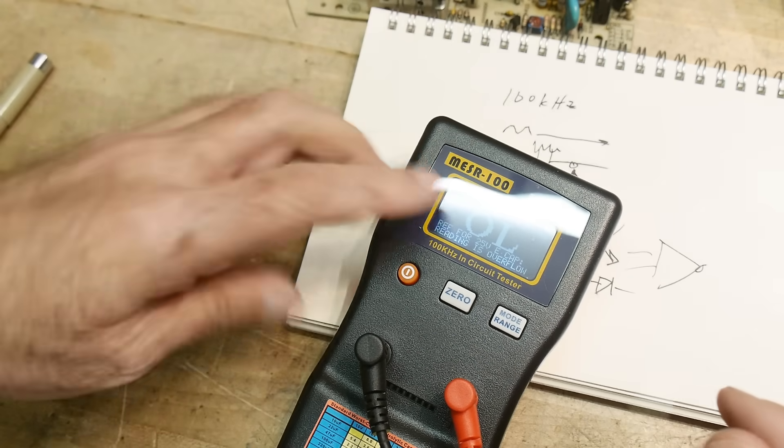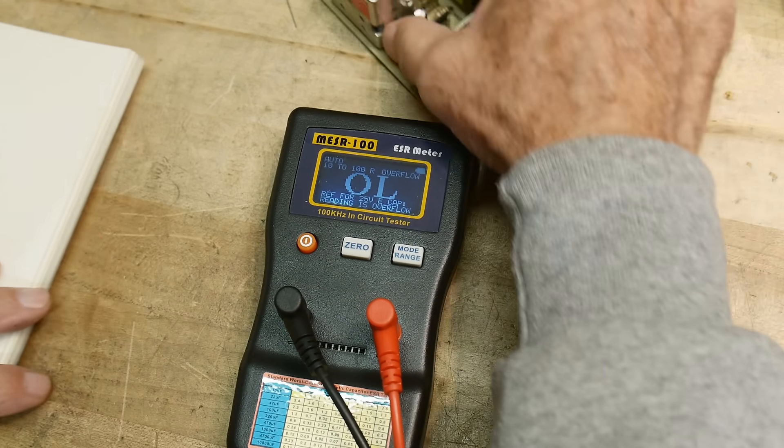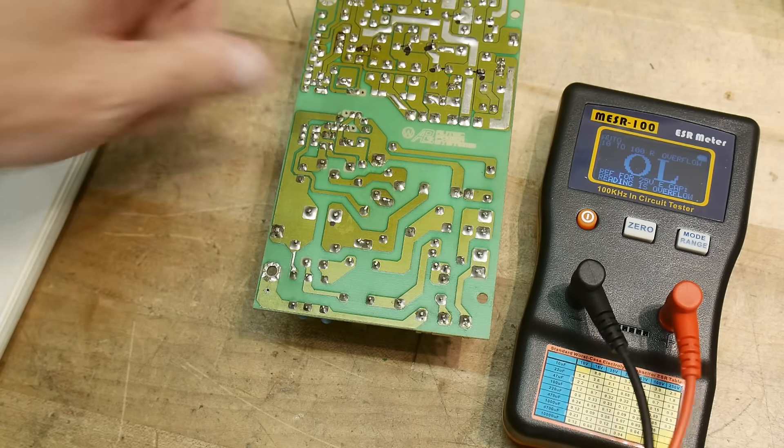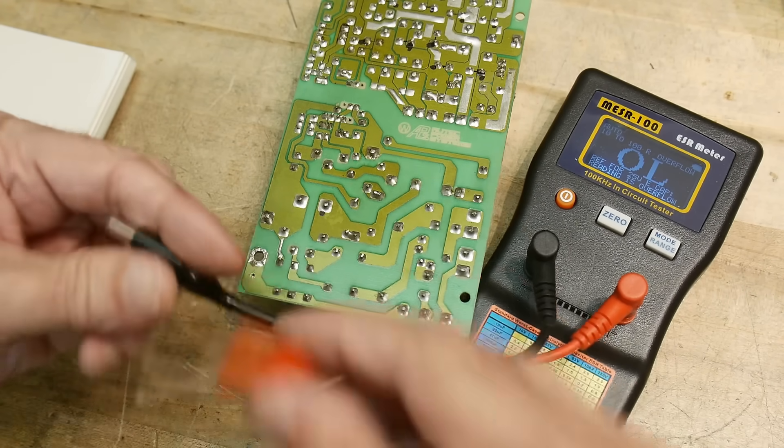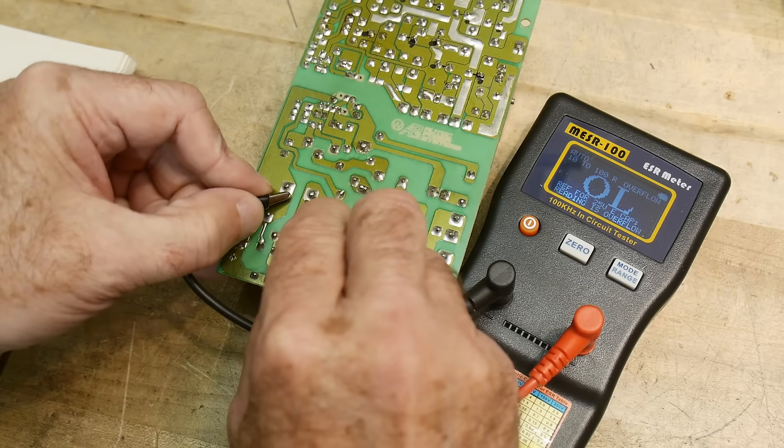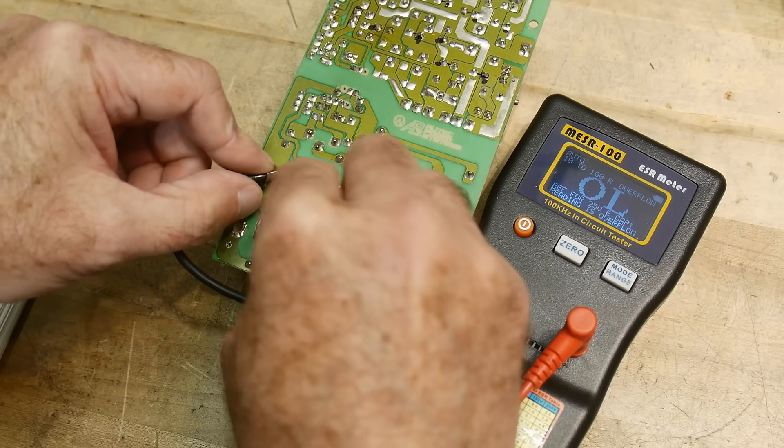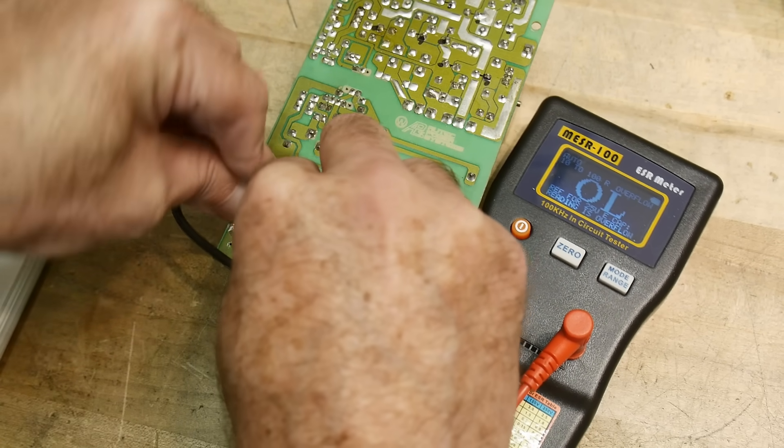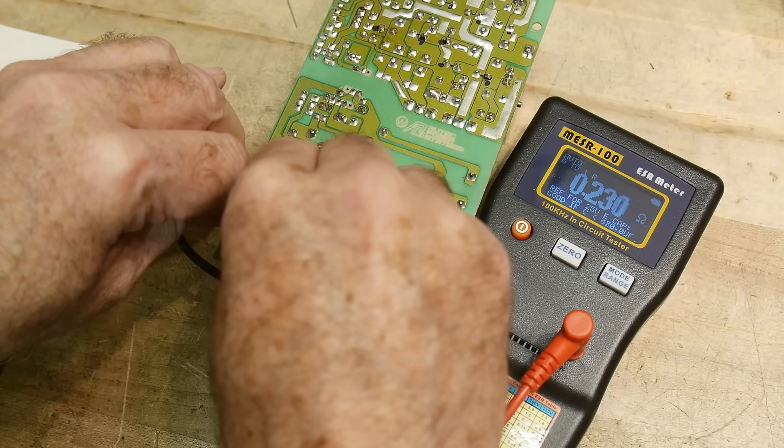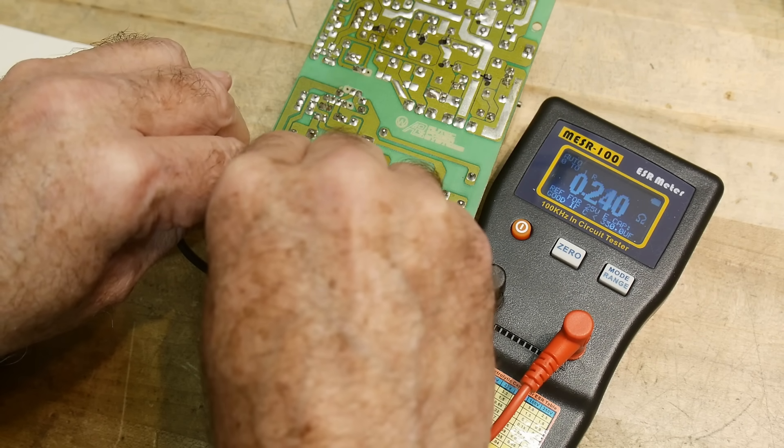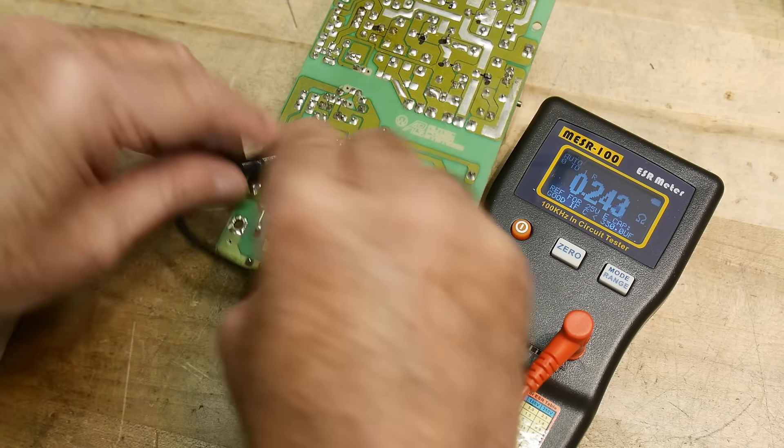Alright, so this one can do in-circuit testing. So let's give it a try. Let's test some capacitors on this power supply here. We got a big fat one here. Let's test that big fat one. I've already marked where the plus and the minus is, so I can get to it from the back side. Alright, so let's test this here. This one is, make sure I'm making good contact here.